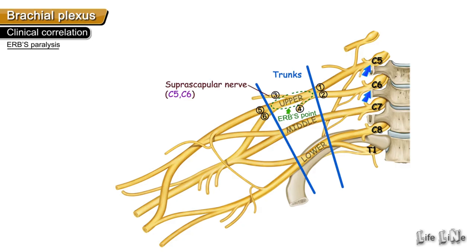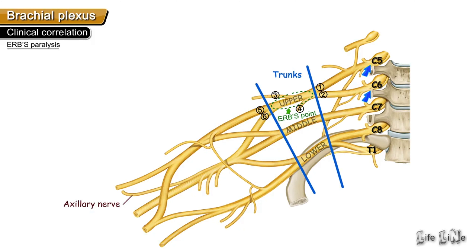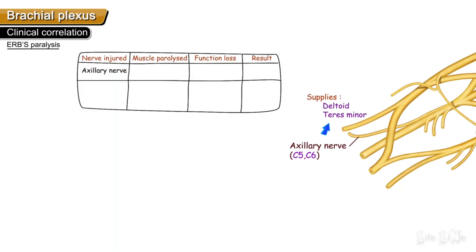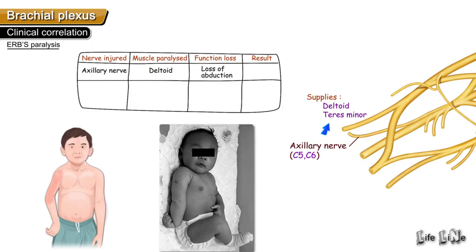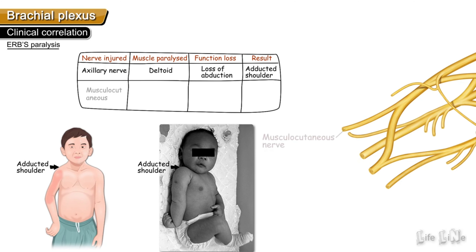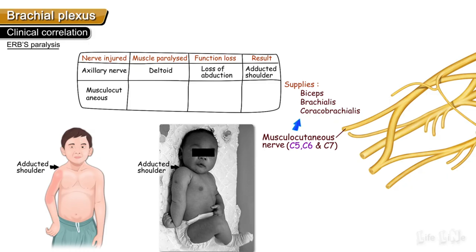In Erb's paralysis, the suprascapular nerve (supplying supraspinatus) is affected. The axillary nerve, with root value C5 and C6, is also affected — it supplies deltoid and teres minor, so there is loss of abduction of the shoulder and an adducted shoulder. The musculocutaneous nerve, with root value C5, C6, and C7, supplies biceps, brachialis, and coracobrachialis.